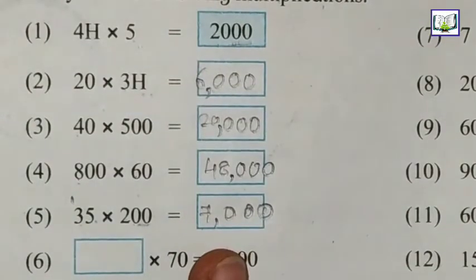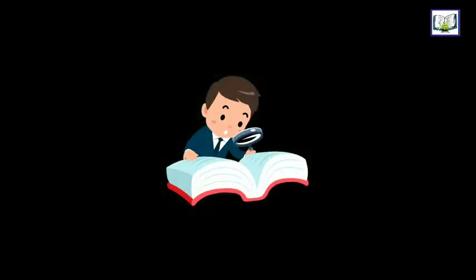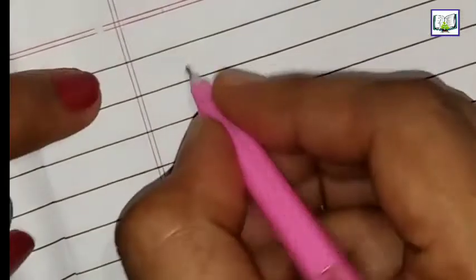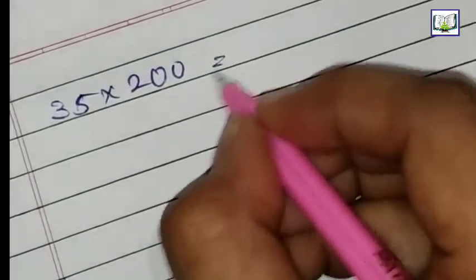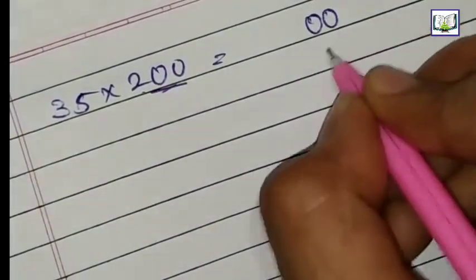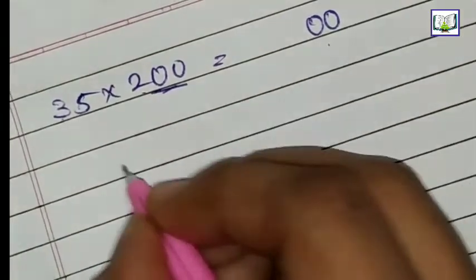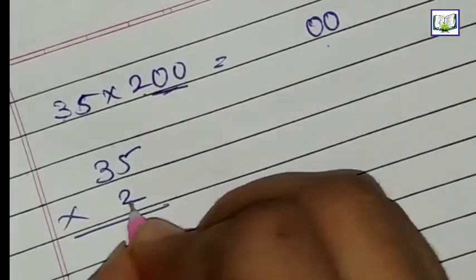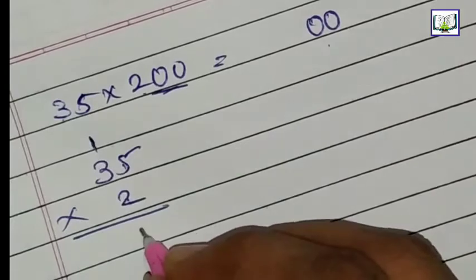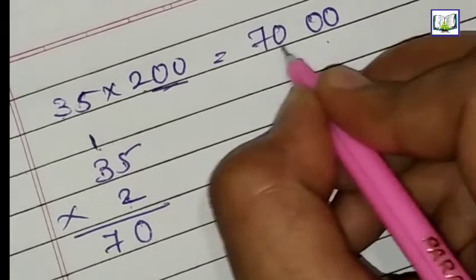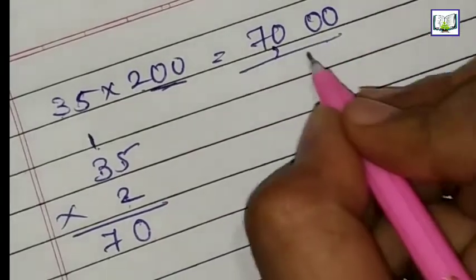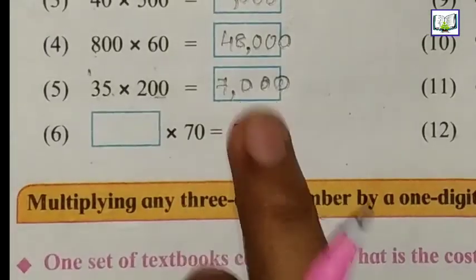Let me explain again. We can do this in the notebook. The question is 35 into 200. We will do it in the notebook first. If there are zeros first, we will write 0 and 0 first. Now we will multiply this, so we can do 35 into 2. 5 twos are 10. Carry. 3 twos are 6, plus 1 is 7. So this becomes 7000. We have the answer here: 7000.